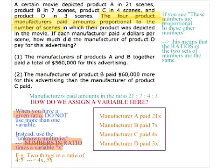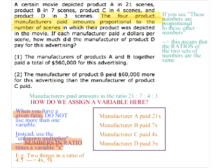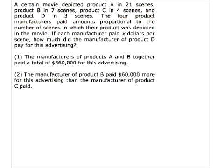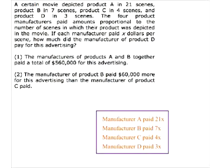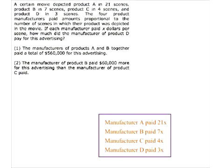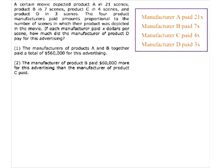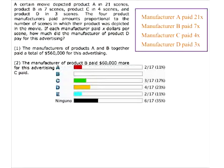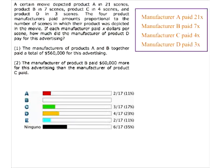So, manufacturer A paid 21x, manufacturer B paid 7x, manufacturer C paid 4x, and manufacturer D paid 3x. Now notice, again, your class answers were all over the place. Here are the class statistics again for this problem. We're basically just guessing here. It looks like people knew that B is wrong, but between A, C, D, and E there's not a clear majority. People are definitely not as comfortable with this as they should be.